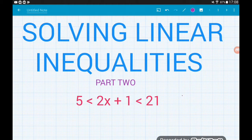So when the x is bounded from below and above and we need to solve inequalities such as 2x plus 1 is greater than 5 but less than 21.